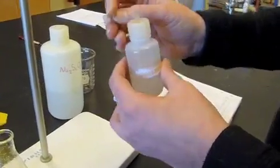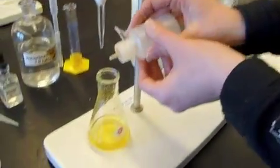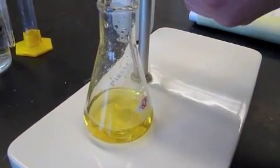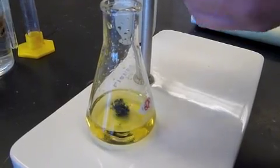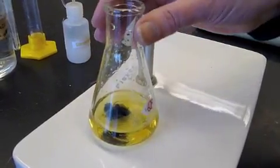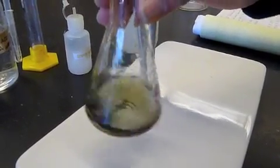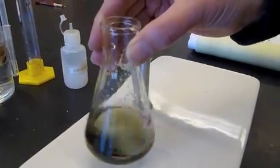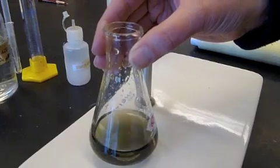To that we're going to take our starch indicator, and the reaction for this is kind of neat. And I'm going to add three to five drops, so I'm going to put two, three, three seem to do it. It looks like ink from a squid. I'm going to swirl it, and it's kind of a blue-black color.